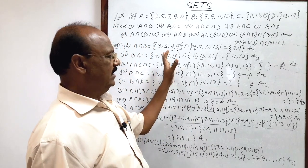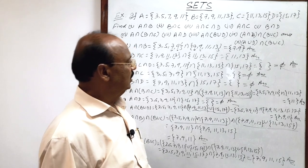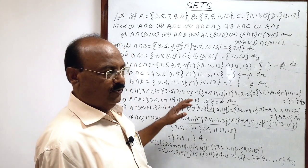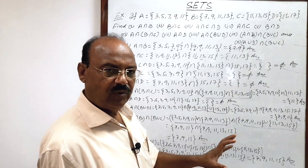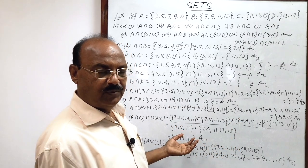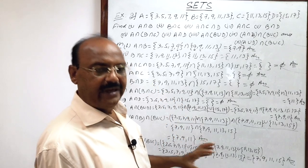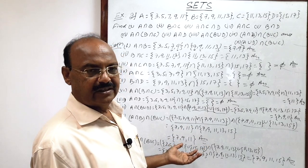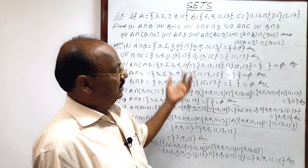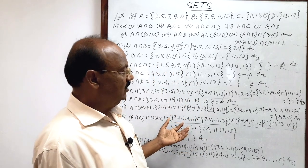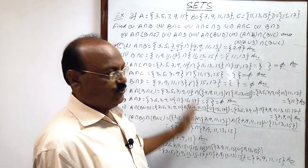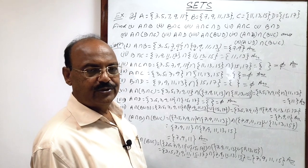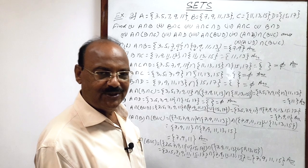We can do these questions very easily. Just remember: in case of union, you collect all the elements from both sets. In case of intersection, you collect only the common elements — those available in both sets. We have done a lot of practice on union and intersection of sets. I hope you have understood it very well. Thank you very much for watching this video. Wish you all the best.